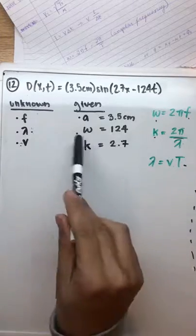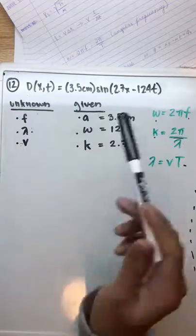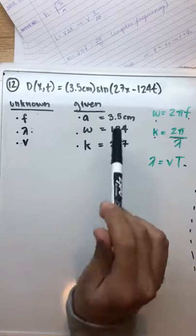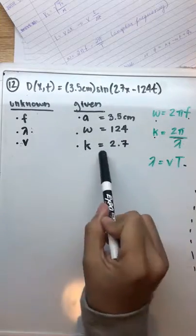The first thing we have to do is list our knowns and unknowns. We are given the amplitude, the wave frequency, angular frequency, and the wavenumber.